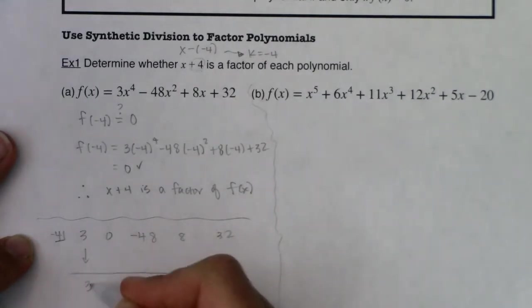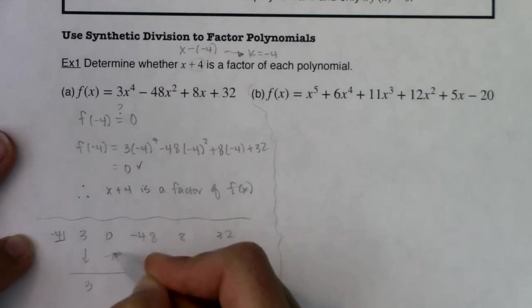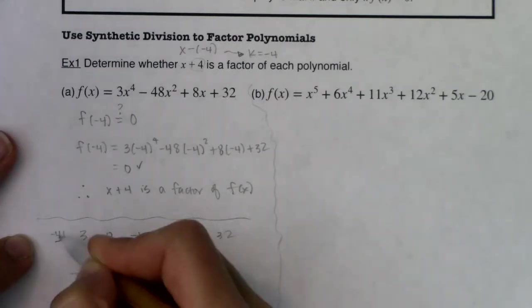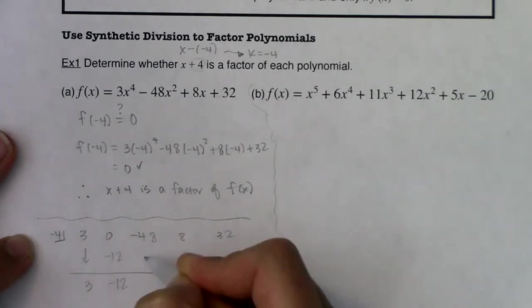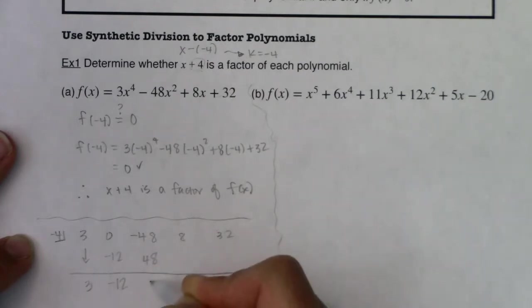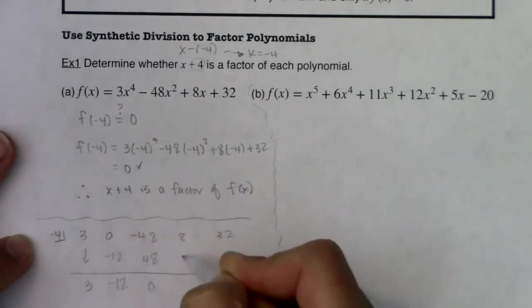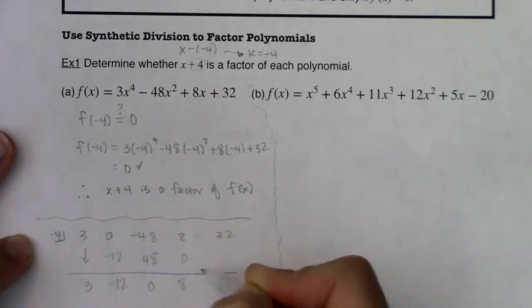The 3 comes down. Negative 4 times 3 is negative 12. 0 minus 12, negative 12. Negative 4 times negative 12, positive 48. This is zeroing out. Negative 4 times 0 is 0. 8 plus 0 is 8. Negative 4 times 8 is negative 32. And what did I get over here? 0.